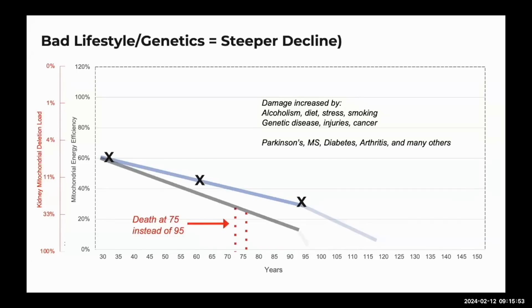That decline can accelerate if you drink a lot, smoke, or have chronic diseases like multiple sclerosis. If you're fighting a chronic disease for 30 years, your mitochondria get burned out faster and you age quicker — that's why people can die 20 or 30 years younger. It really comes down to how long your mitochondria are going to last you, starting from perfect ones when you're young.